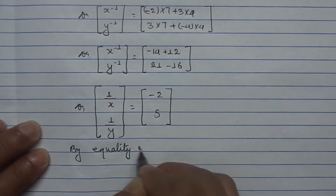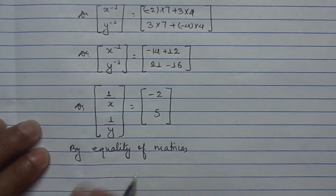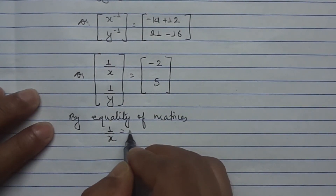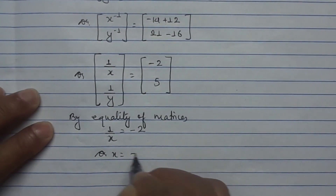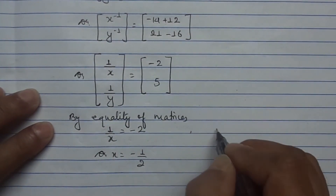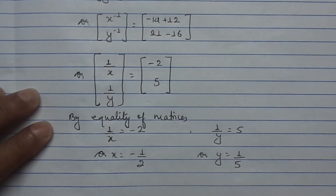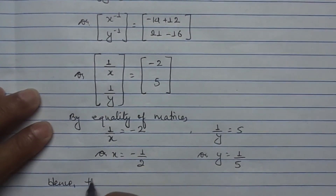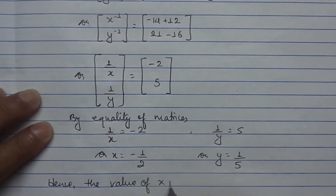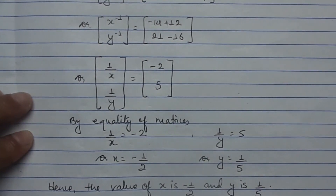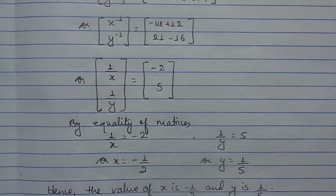By equality of matrices, 1 upon X equals minus 2, so X equals minus 1 upon 2. Similarly, 1 upon Y equals 5, so Y equals 1 upon 5. Hence the value of X is minus 1 upon 2 and Y is 1 upon 5. This is how you can find the values of variables X and Y from the given two equations.